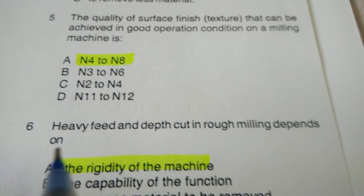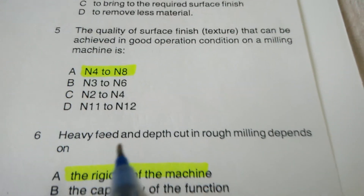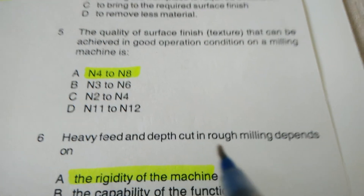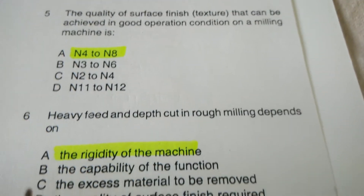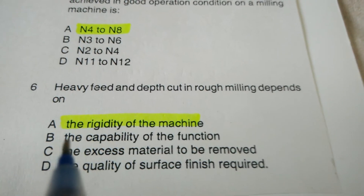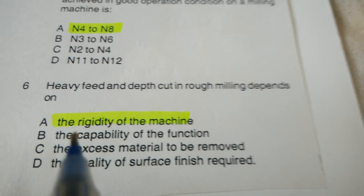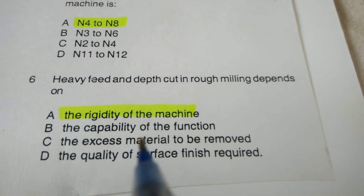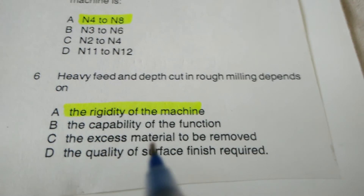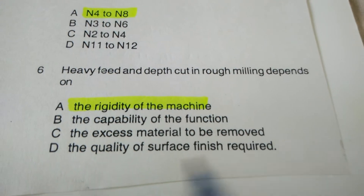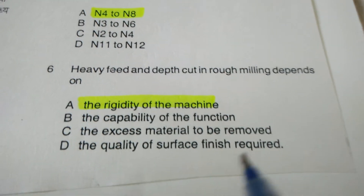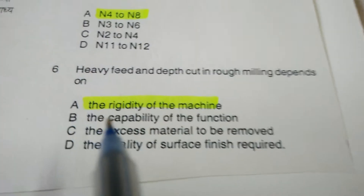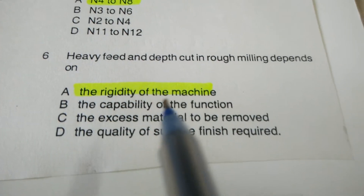Next objective: Heavy feed and depth of cut in rough milling depends on — the rigidity of the machine, the capability of the function, the excess material to be removed, or the quality of the surface finish required? The correct answer is the rigidity of the machine.